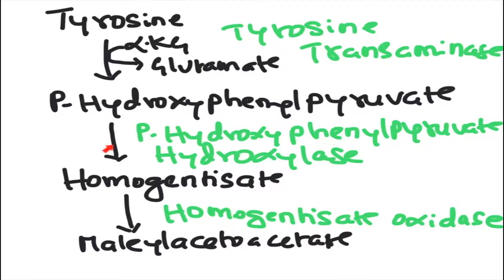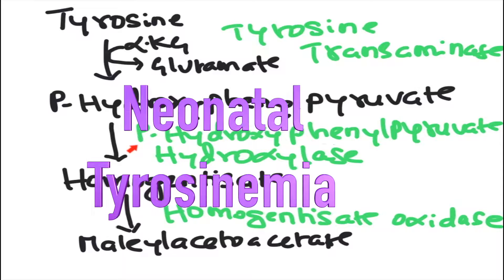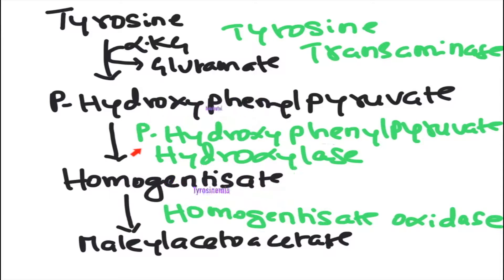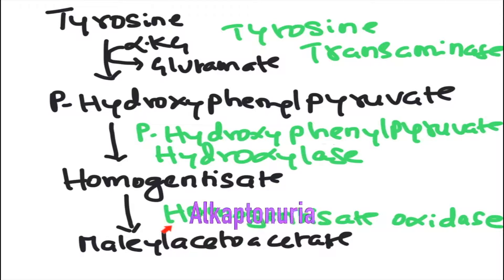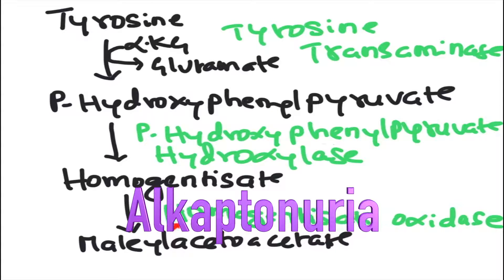Defect or deficiency in P-hydroxyphenylpyruvate hydroxylase enzyme will give rise to a disorder called neonatal tyrosinemia, which is also referred to as transient tyrosinemia. Defect or deficiency in homogentisate oxidase enzyme will give rise to a disorder called alkaptonuria.